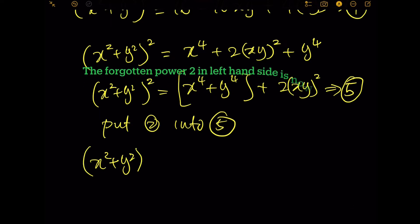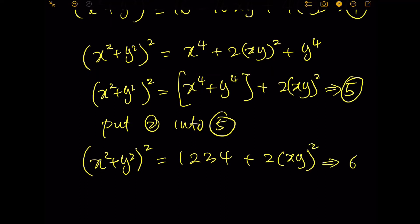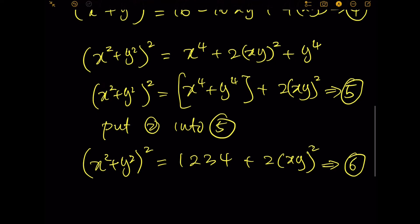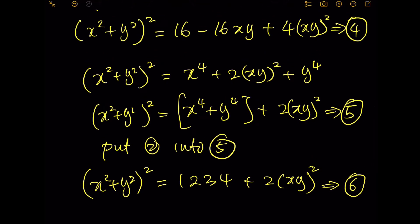equals 1234 + 2(xy)^2. This is equation 6. If you look at equation 4 and equation 6, the left hand sides are the same, so we combine 4 and 6.